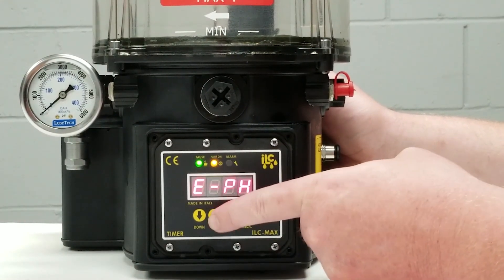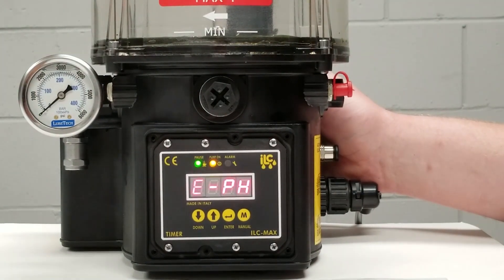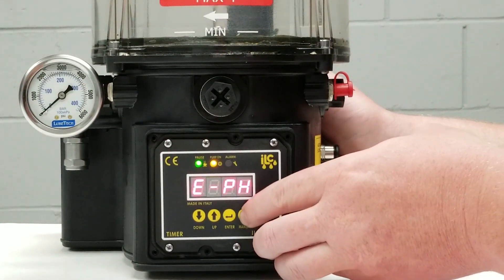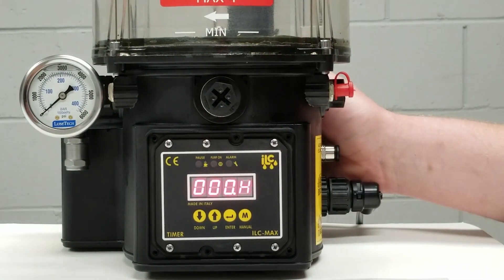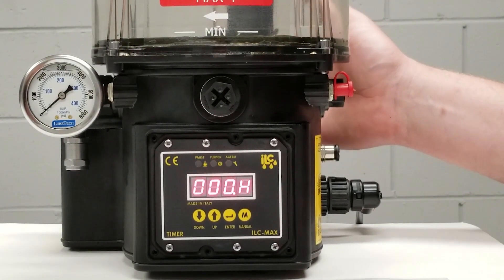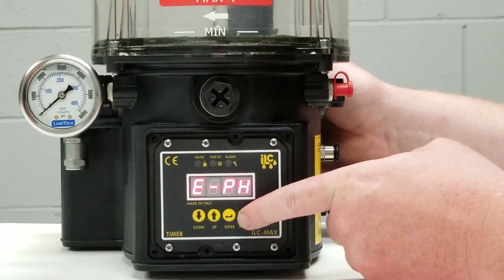Again I will press the up button and this would be my pause time in hours if we so chose to program it that way. This particular setup we have chosen no hours, so this pump is only in delay for eight minutes with no hour setting. We'll leave this at zero and go back to our programming menu.